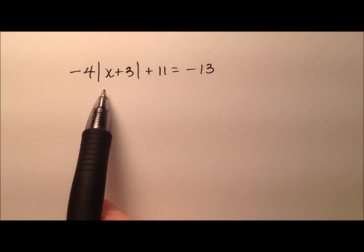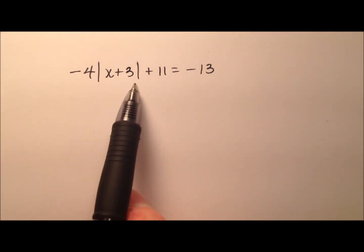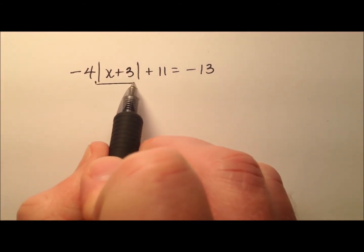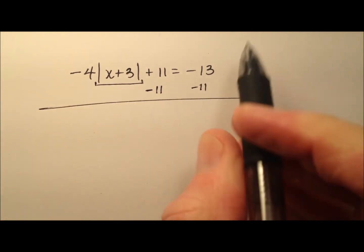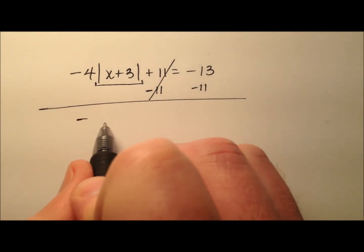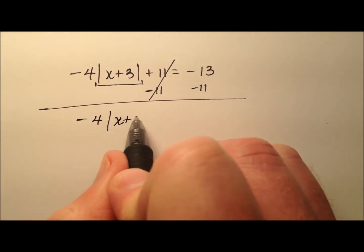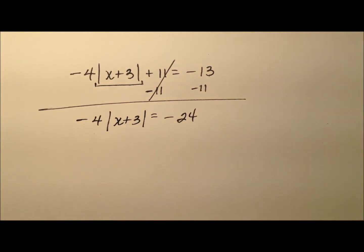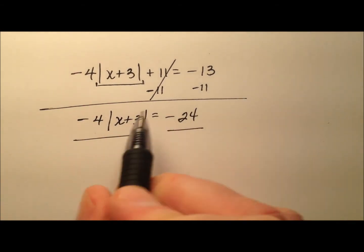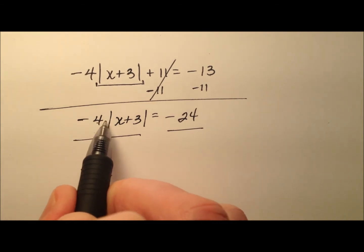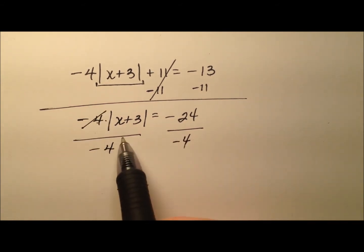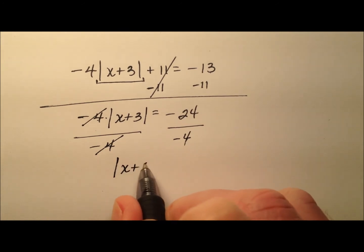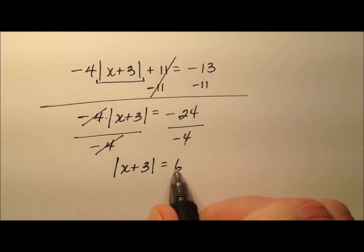In this second example, the absolute value expression is not isolated on one side by itself, so we'll need to isolate it first. I'll start by subtracting 11 from both sides to cancel that constant, giving me negative 4 times the absolute value of x plus 3 equals negative 24. Then I'll divide both sides by negative 4, and they cancel from the left, leaving the absolute value of x plus 3 equals positive 6.